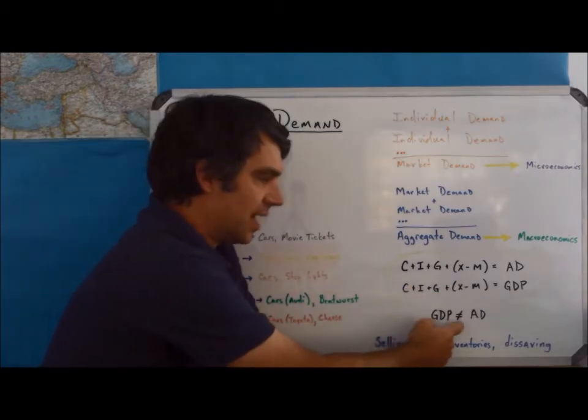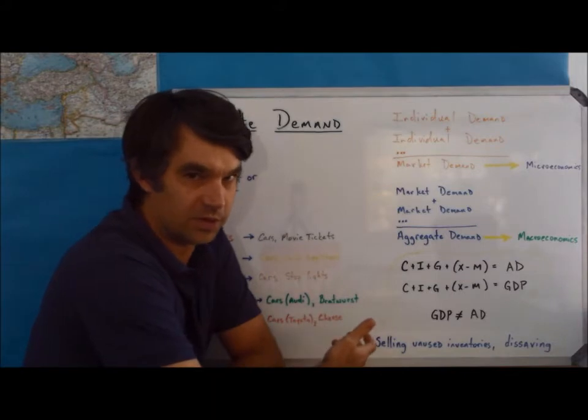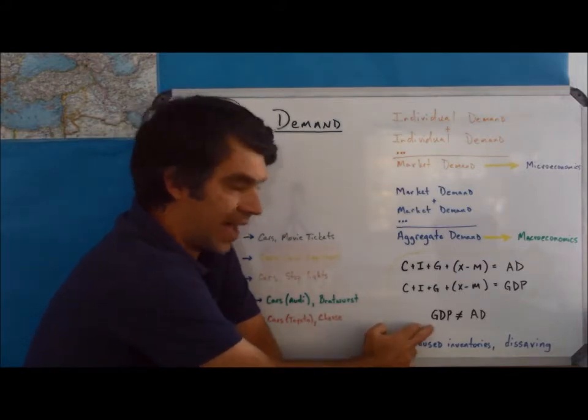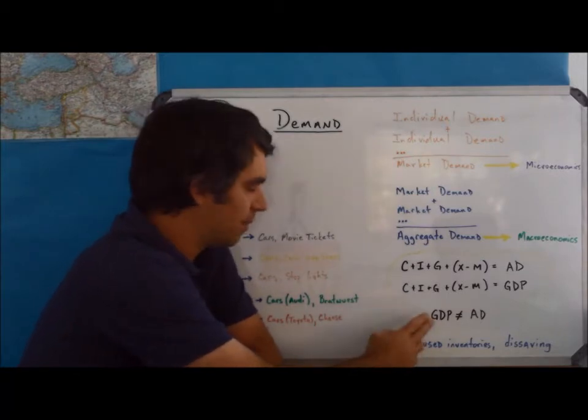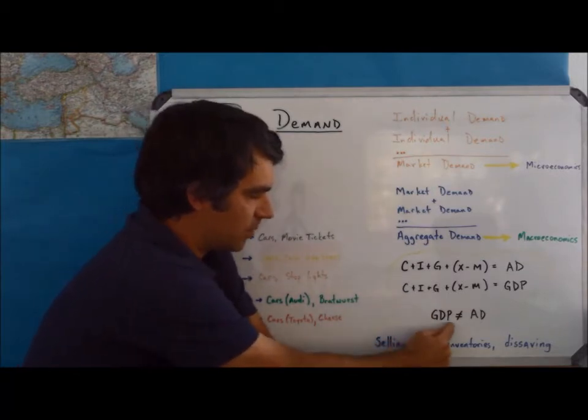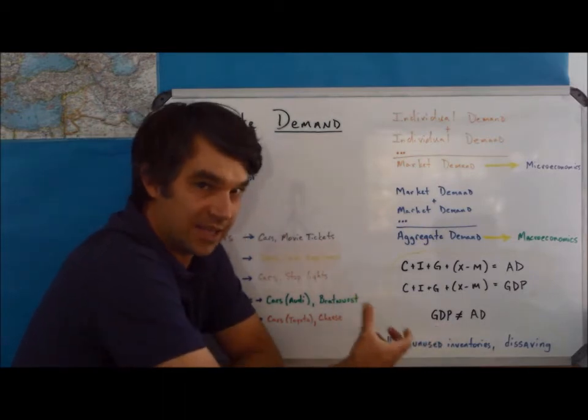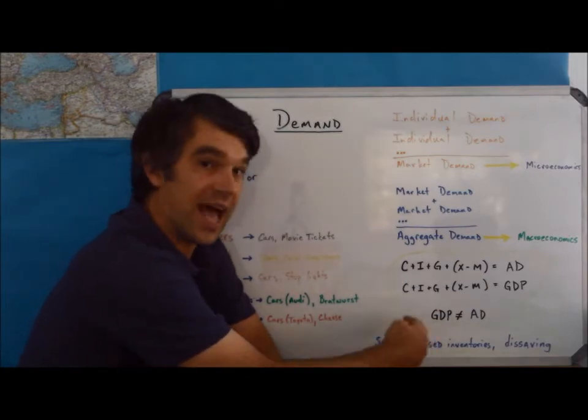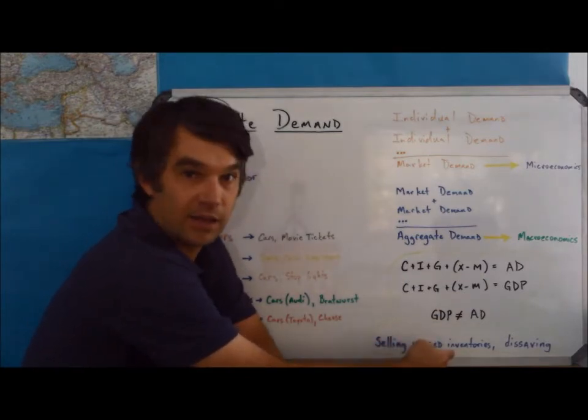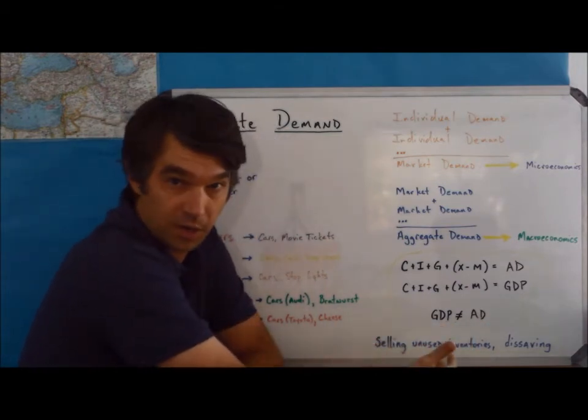But GDP does not equal aggregate demand. It can, but in most cases it won't. The reason for that is, remember GDP is about the value of production inside of a year. So I could sell something that I produced last year and didn't sell. So that would be part of aggregate demand. Audi could sell cars that were a year old.